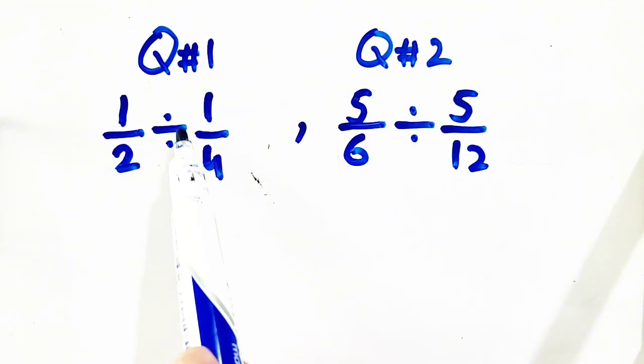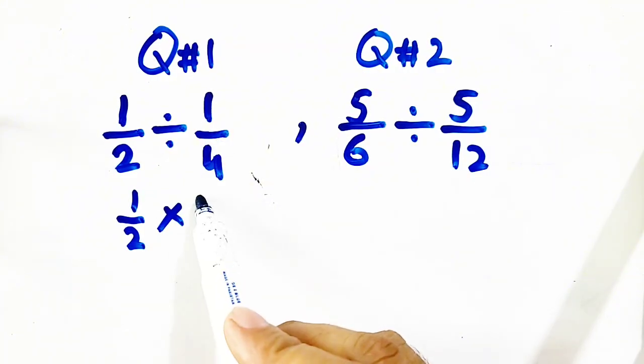So first of all, we will change this division into multiplication. Then we will simplify it. So we will get 1 by 2 times, flip it, so it will become 4 over 1.